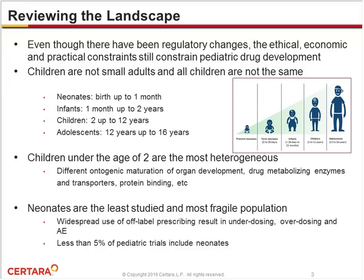Over the years, people have come to the consensus that when scaling drug kinetics in the pediatric population, for ages greater than six years old, allometric scaling has been successfully used to scale PK. However, for children under the age of two, due to the heterogeneity of this population, allometric scaling has not been as successful, due to the different ontogenic maturation of organ development, drug metabolizing enzymes and transporters, protein binding differences, and so on.